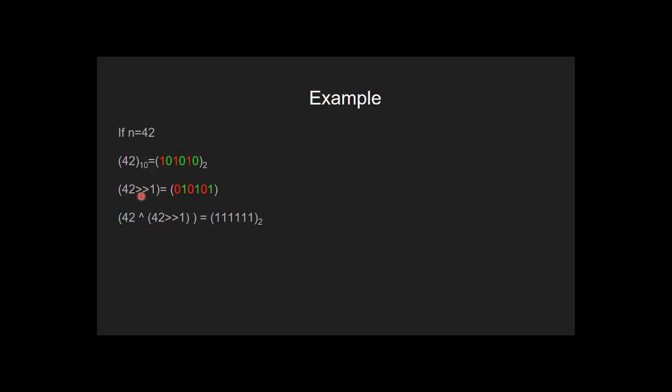So when we right shift 42 by 1, we get this binary sequence. Here all positions of 1 now have 0, and all positions of 0 have 1. And when we perform XOR operation on n with modified n, we get a number which has all bits set. This is only true for those numbers which have bits in alternate pattern.